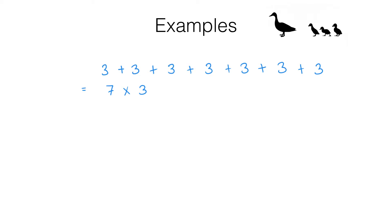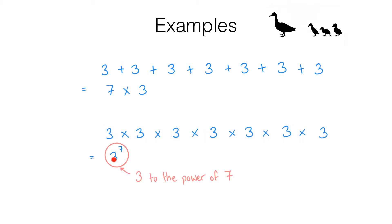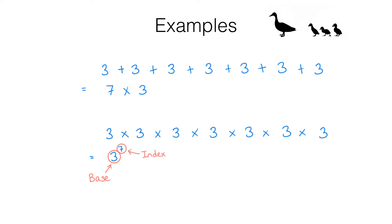But what if I wanted to do this calculation? Well, we have a neat way of writing that too — we write it like this. We say this as 3 to the power of 7. This number 3 is known as the base and the number 7 is known as the index. The index tells us how many copies of the base we're multiplying together. Note that the index is normally written a little bit smaller and raised above the base.